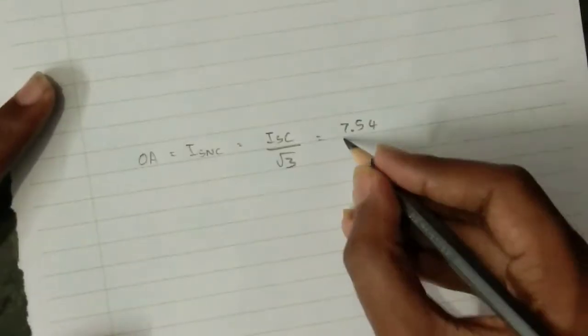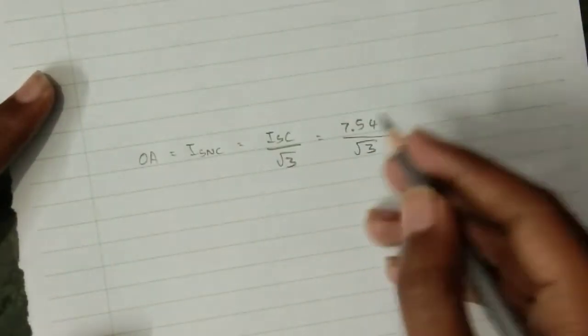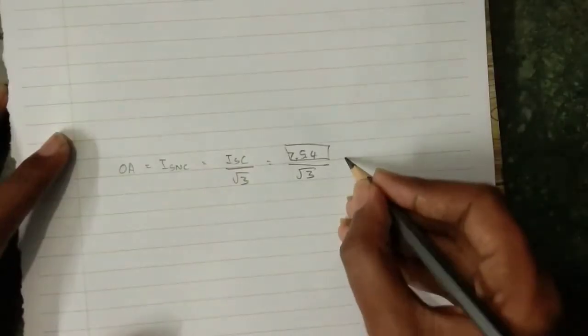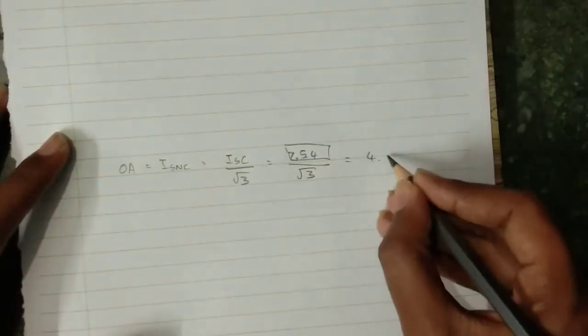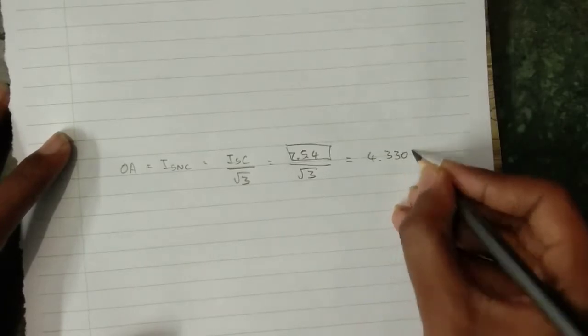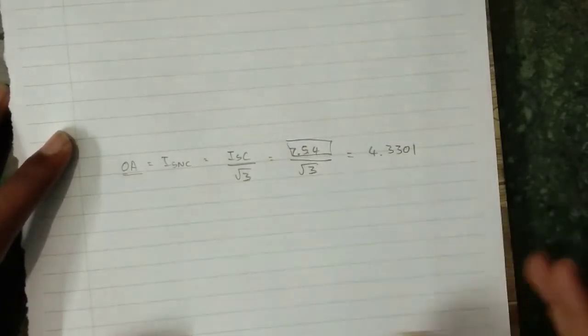By root 3, I am just dividing it, 4.33. This one is OA value.